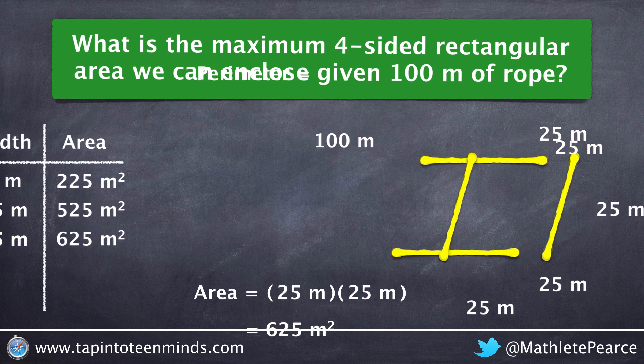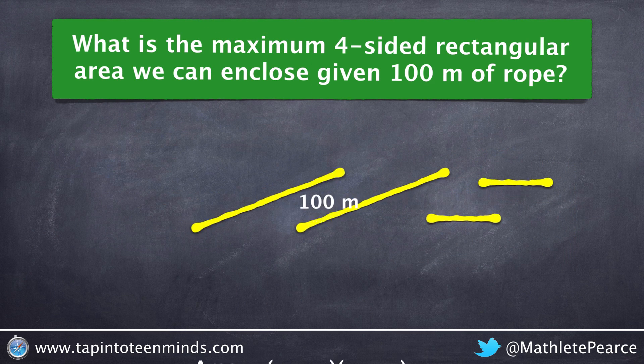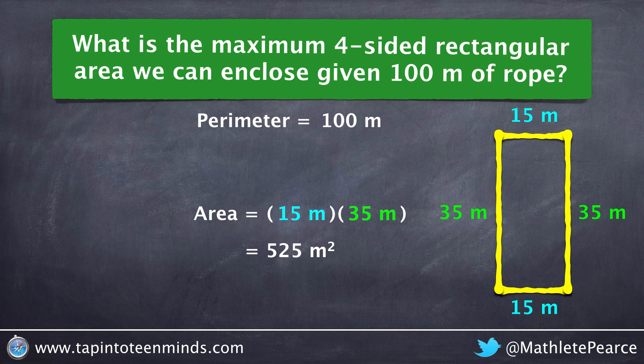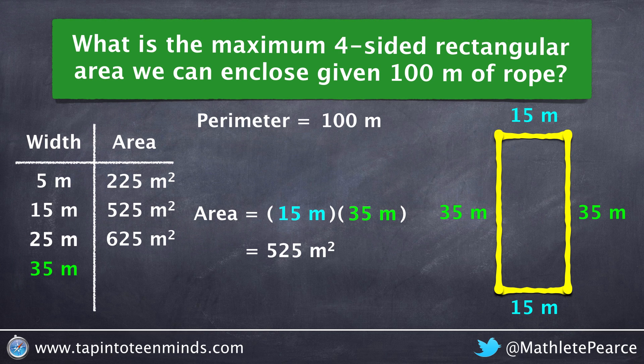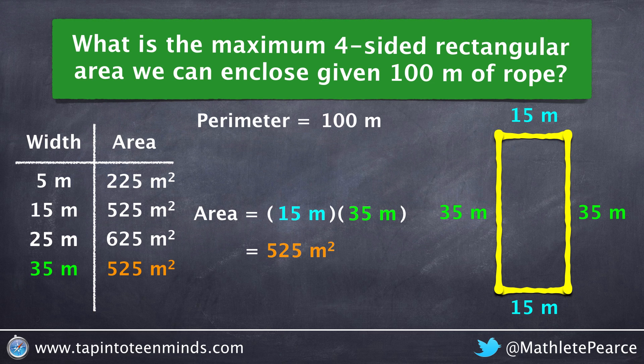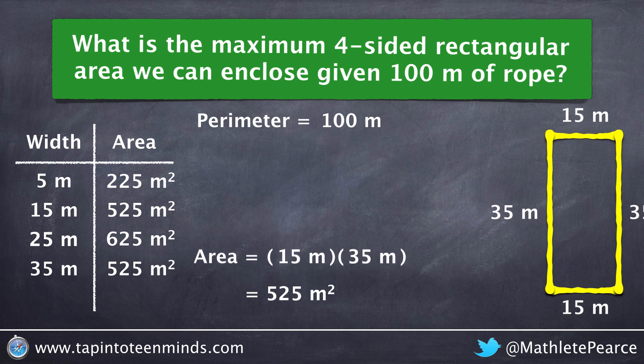Continuing our exploration, we're going to increase the width to 35 meters, which will leave us with 15 meters for our lengths. And when we look at our table, we'll notice that when the width was 15 meters, the length was 35 meters. Now our width is 35 meters, and our length is 15 meters. So essentially, we're going to get that same area of 525 meters squared.